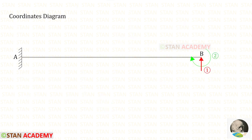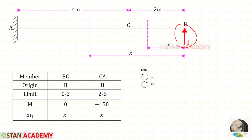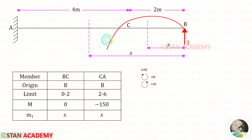Now we are going to find the moment M1. For that we have to remove all of the loads and moments from the beam and then apply a unit load at the first coordinate, which is RB. The unit load is acting in the anti-clockwise direction about both sections, so it will be positive and the distance is x. Thus 1 times x gives us M1 = x.